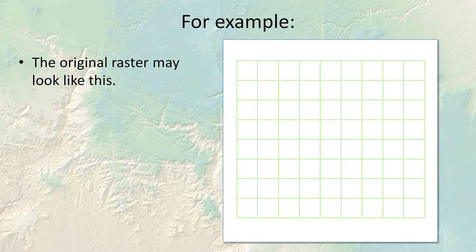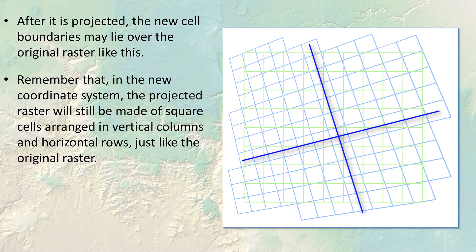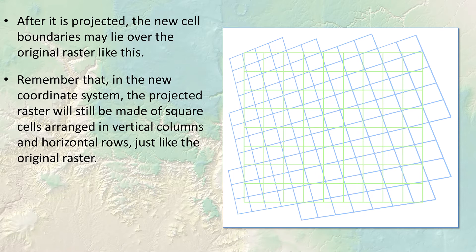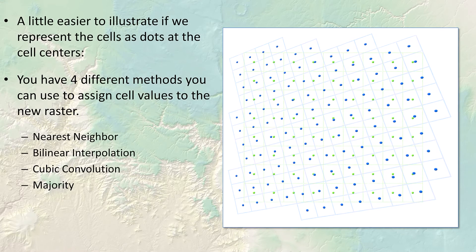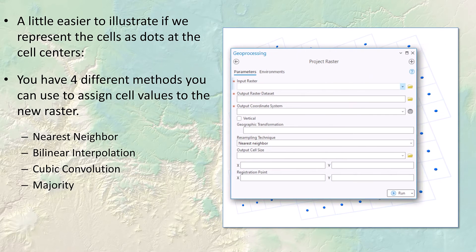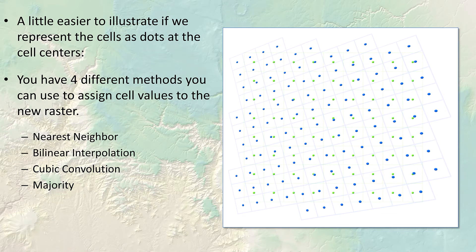Let's understand this issue a little bit. Here's your raster — it's a bunch of rows and columns. When you project it, the new raster will still be a bunch of rows and columns, but they will be moved, rotated a little bit, and the sizes will be shifted around. The question becomes how do you transfer the data from the original raster to this new raster that is a whole new set of rows and columns? Each new cell from the new raster covers parts of several old cells. The raster projection tool offers you several methods: nearest neighbor, bilinear interpolation, cubic convolution, or majority. These are the four methods you can use to transfer the original cell values to the new raster.